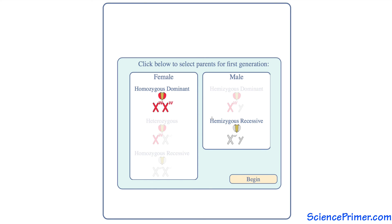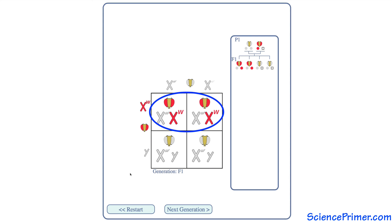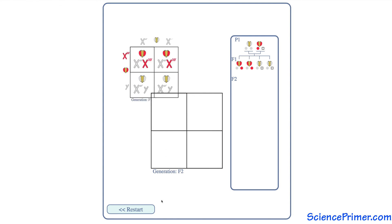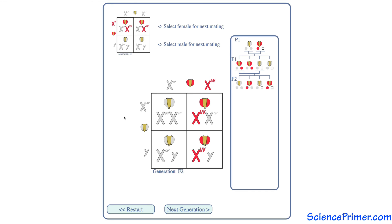Inheritance patterns with the other reciprocal cross — hemizygous dominant male with hemizygous recessive female — diverge from the Mendelian pattern more quickly. The F1 generation contains an equal proportion of white and red-eyed individuals, but all males have white eyes and all females have red eyes. Crossing the F1s again results in a 1 to 1 ratio of red and white-eyed individuals, but in the F2 generation, half the female offspring and half the male offspring have red eyes.